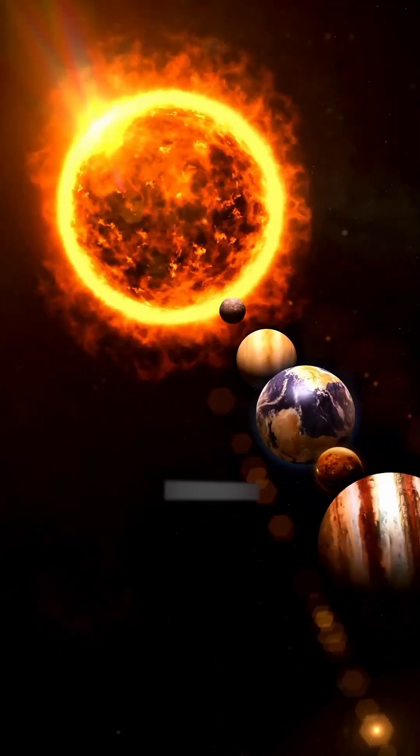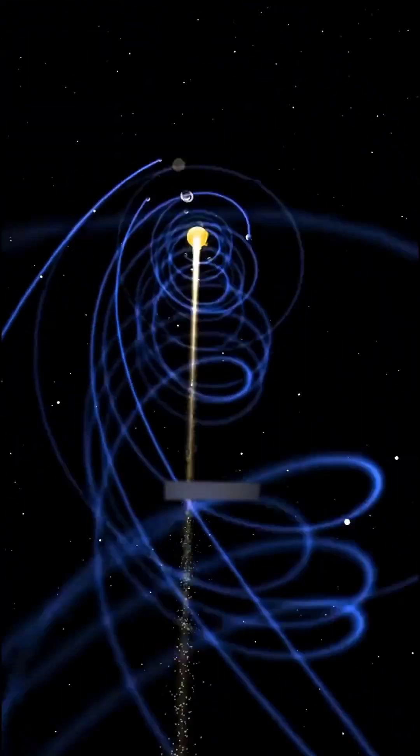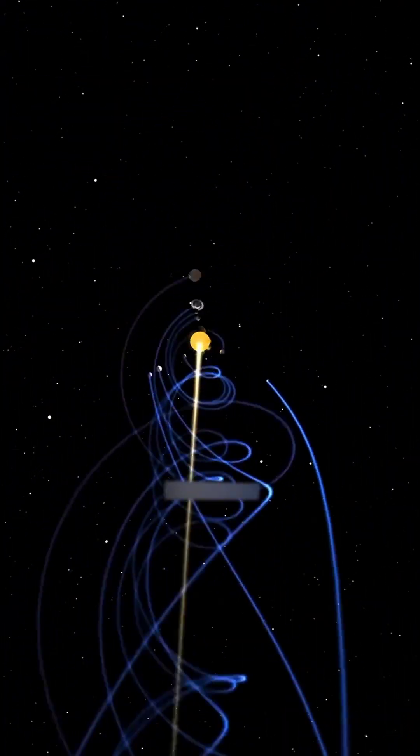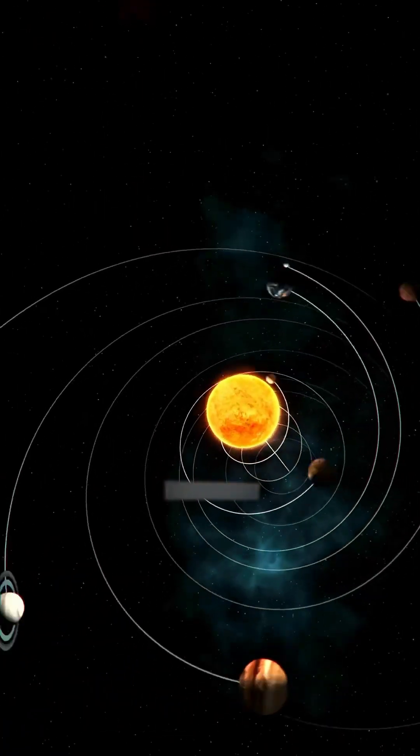As kids, we were often taught that our solar system had only nine planets, including Pluto. But did you know there was actually one more planet that we've almost completely forgotten? At one point, our solar system had ten planets, not just nine.